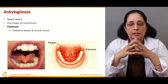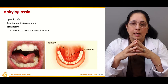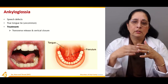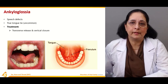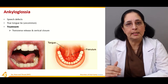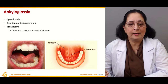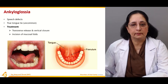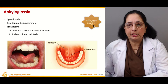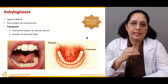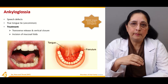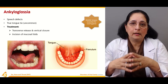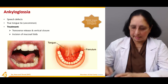In ankyloglossia it is not a true tongue tie, but the free mobility of the tongue is affected, and because of the immobility of the tongue there is a speech disorder. The treatment is freeing the tongue by release and vertical closure, including incision of mucosal folds. A mobile tongue is essential for oral hygiene, so if it is not freely movable and there are adhesions, it should be released and treated.